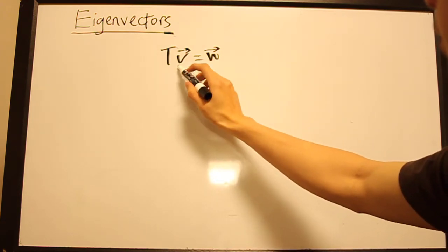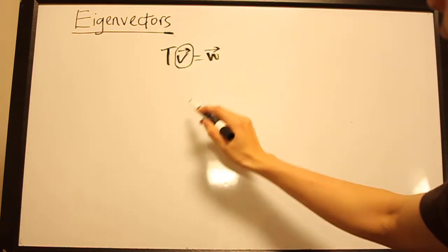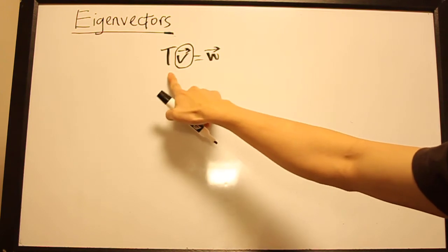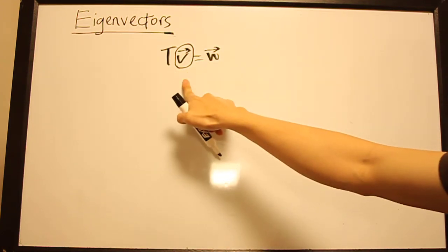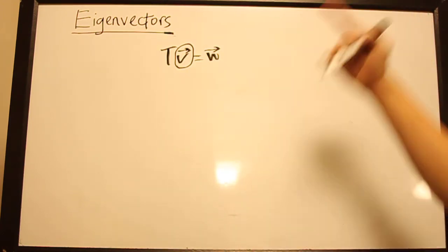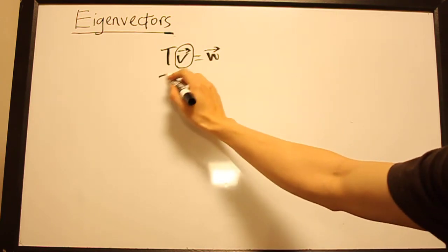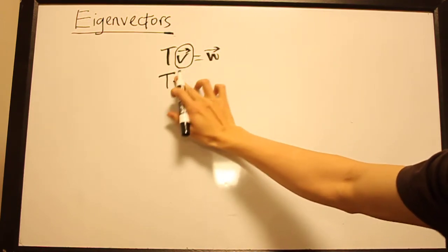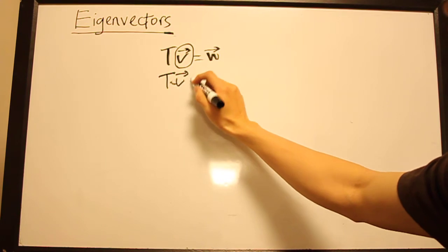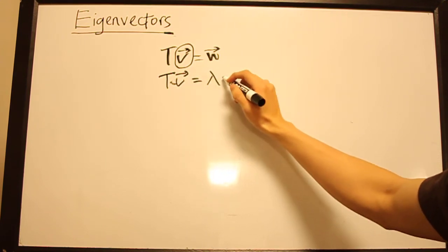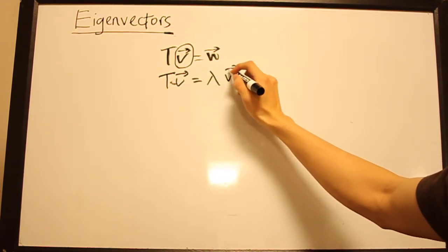Now, there are special kinds or special class of V for which the action of T on V doesn't change the direction of V, but rather just scales it along the same direction as V. So we write this T(V) equals just some constant times V. So this is a scalar.